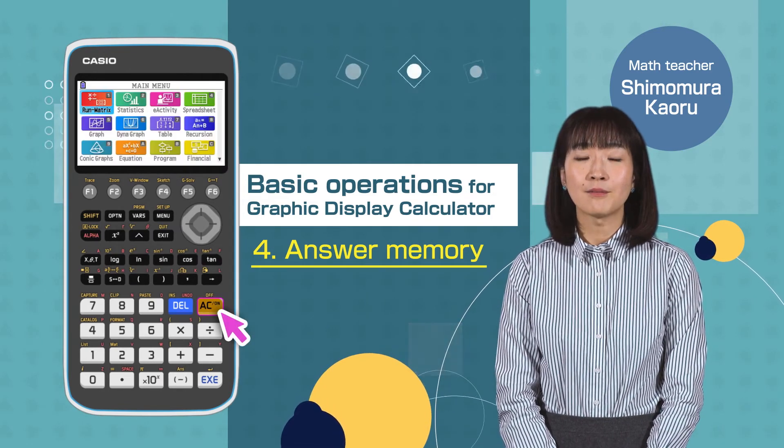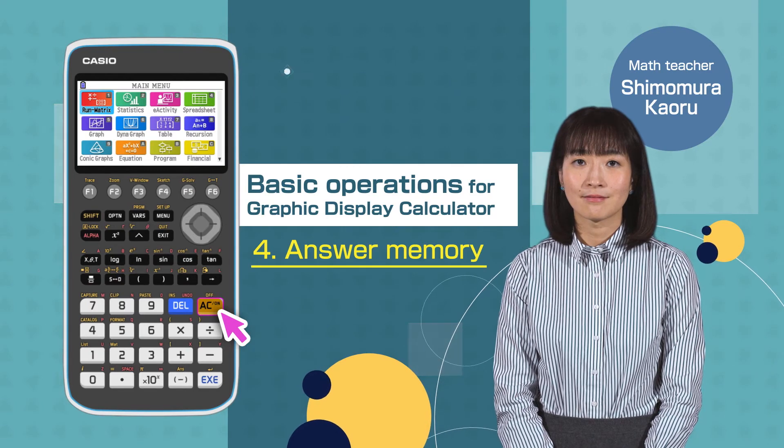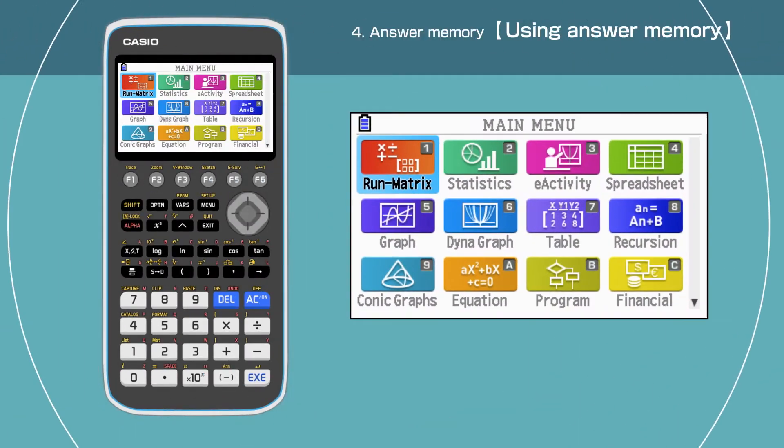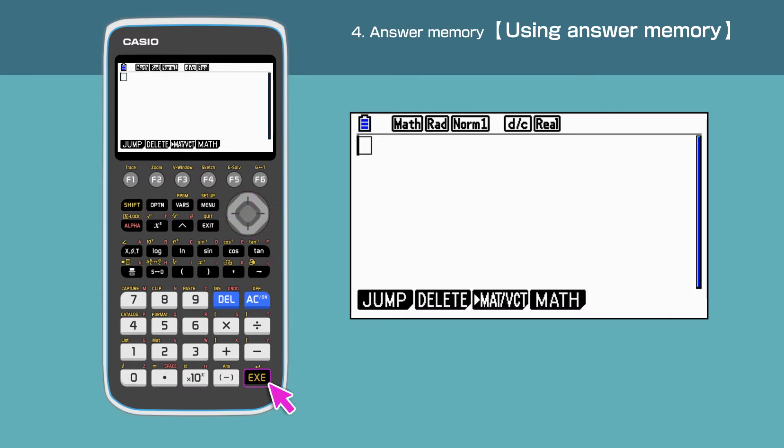Switch on your calculator, pressing AC button. Press the menu button to open the main menu. Press 1 to enter the Run Matrix menu, or move the cursor and highlight 1, Run Matrix, then press Execute.